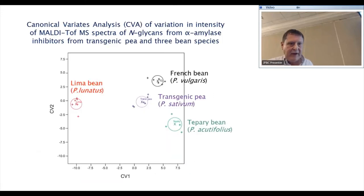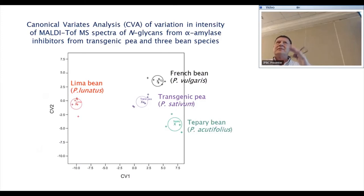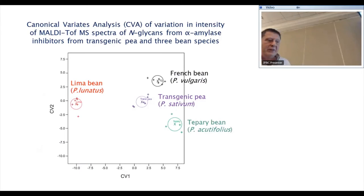We used canonical variance analysis — our statisticians told me it was the best thing to use — taking glycan distribution data from the different samples. French bean separates clearly at the top, the transgenic pea sits slightly below, and the other two bean species are quite well separated. The question then is: is this substantially equivalent or not? Within the context of beans broadly, yes; within the context of French bean specifically, it is slightly different. But it's a lot less different than the different bean species which are also consumed. This provides a tool for substantial equivalence — you need to decide where to draw the boundaries.